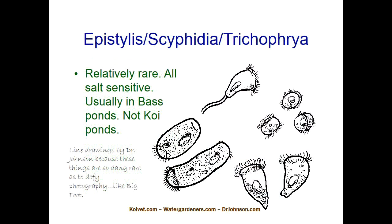Here's a ciliated parasite you don't see very much — Epistylis. It's basically goblet-shaped with a long neck and a ciliated rim around the top of the wine goblet. It is often mistaken for fungus. When you see cotton growths on the fish — mouth, fins, body — you never really know whether it's fungus, Columnaris bacteria, or Epistylis. Knowing what it looks like under the microscope is important because if you can see it's Epistylis, you know you have a ciliate, which is super easy to clear up with salt, Clout, formalin, or pretty much just about anything.